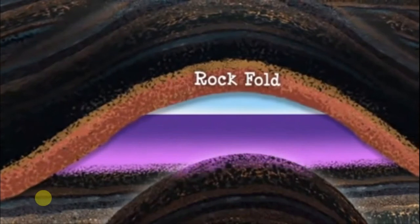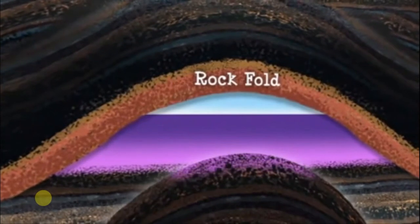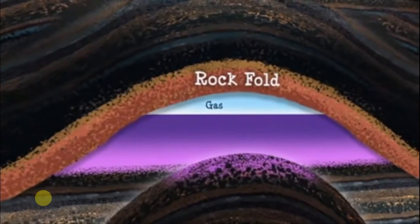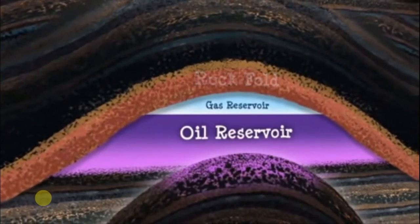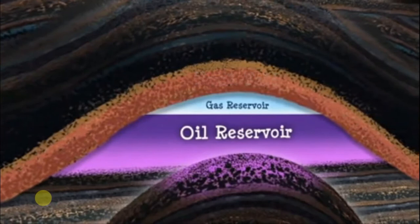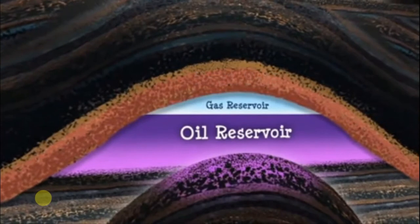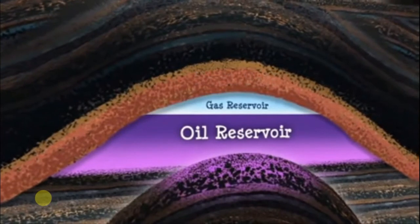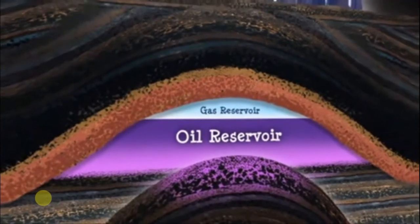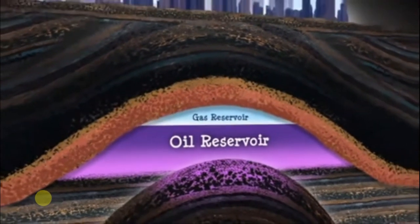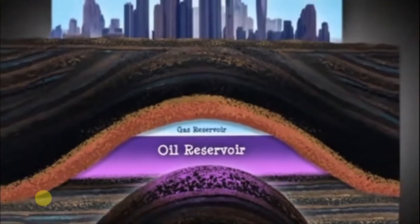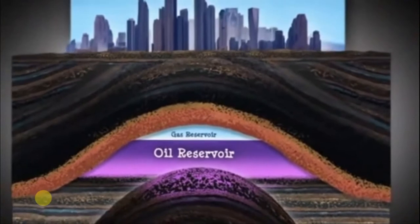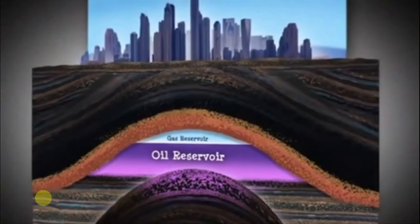Within the crust, oil or gas deposits build up and form reservoirs. Reservoirs are like vast sponges filled with oil and gas. They can be as large as a city.